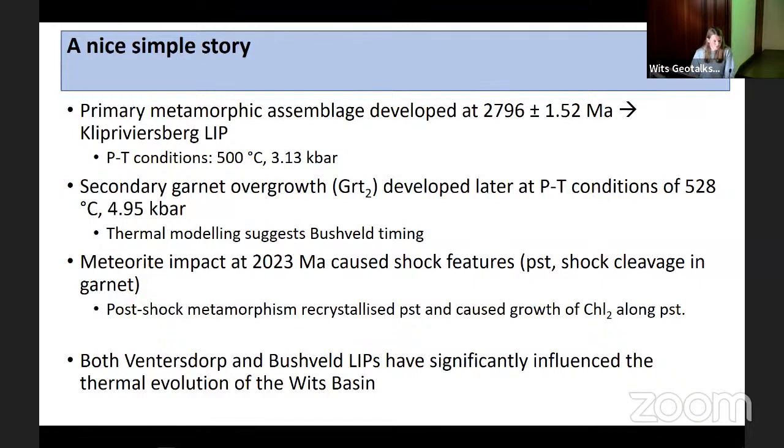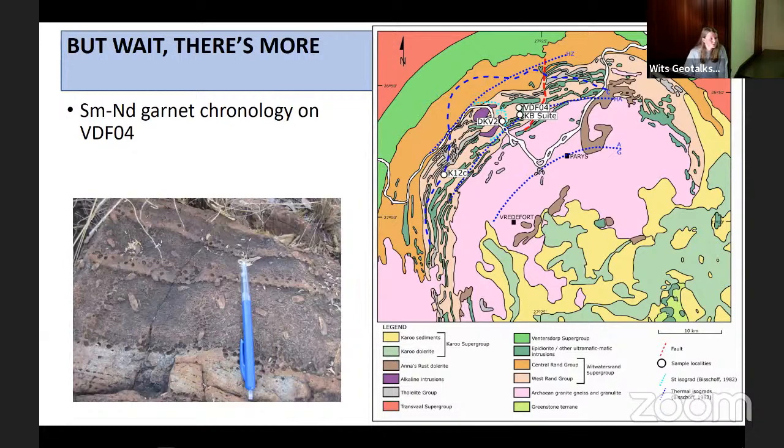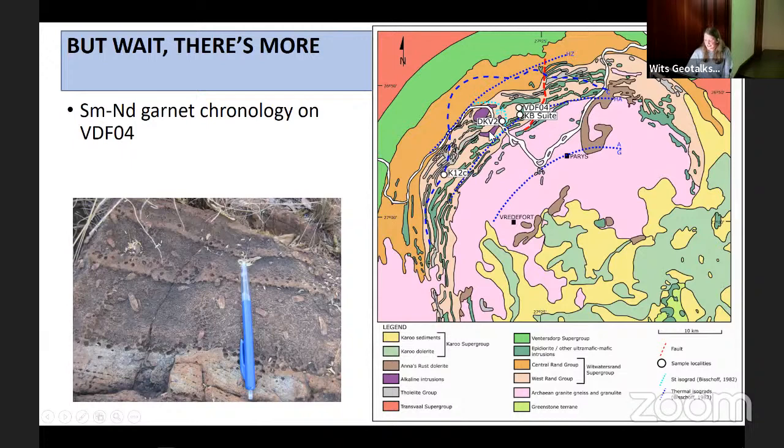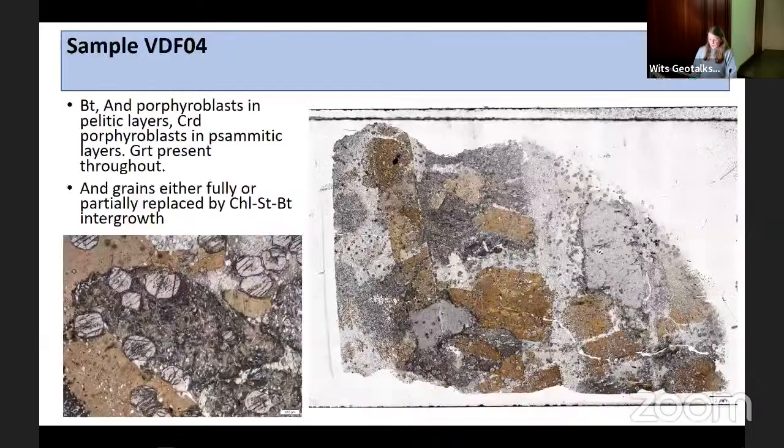We put together a PT path. We have Wits loading at 20 degrees C per kilometer geotherm, then the start of Klipriviersberg group which increases temperature with little pressure increase. We hit garnet cores and garnet growth at M1 - Klipriviersberg group metamorphism - followed by near isobaric cooling. We have a little jump that may be related to faulting and temperature input from further lavas for the Platberg Pineal. We get back to 20 degrees per kilometer geotherm with Transvaal loading, followed by emplacement of Bushveld complex pushing up temperature. We get M2 garnet overgrowth and shortly thereafter the meteorite impact at 2023 million years.